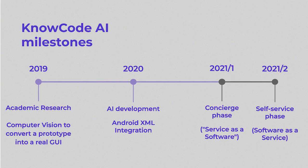A little about the history of NoCode: we started in 2019 as academic research to use computer vision to convert a prototype. We started by applying this for mobile applications, then moved to embedded applications. In 2020, we created the AI and the Android XML integration. This year, we are already integrated with GUI Guider and LVGL, and we have plans to integrate with more technologies. If you have suggestions, just send them to us. This year we are opening this as a service, and by the end of the year we want to provide it as a self-service cloud platform.